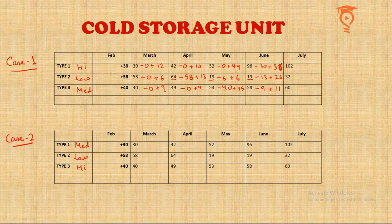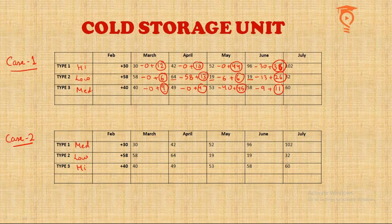Now let's find the total fresh cauliflowers added at the end of each month starting from March. This is necessary because the question states that exactly in one month 86 cauliflowers were added — we must find a month where the sum equals 86. In Case 1, the numbers are too small early on, then 44 plus 6 plus 45 equals 95 — too big — and 36 plus 26 plus 11 equals 73. No month gives 86 in Case 1.